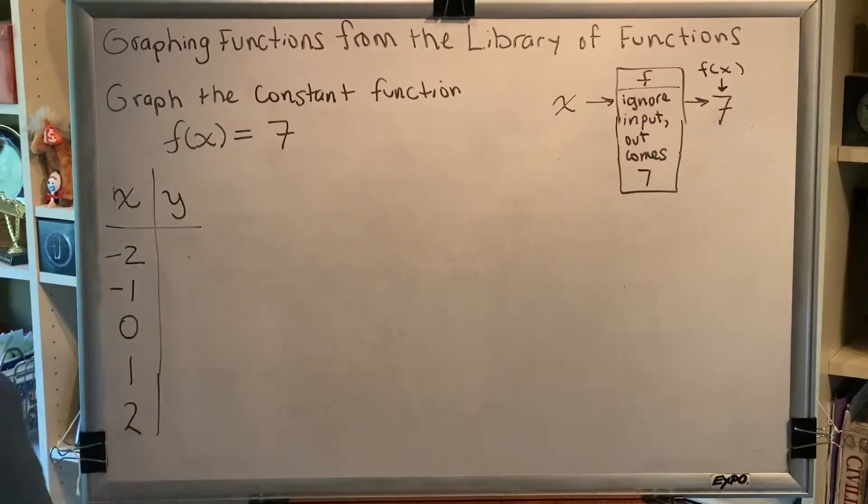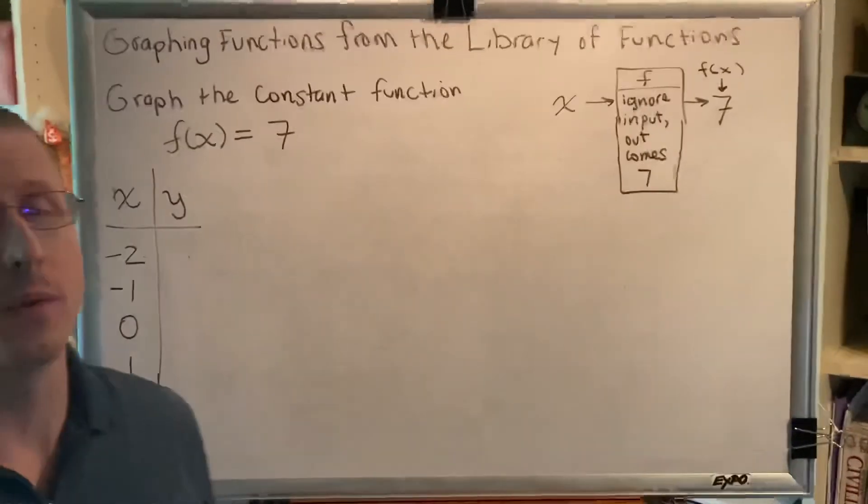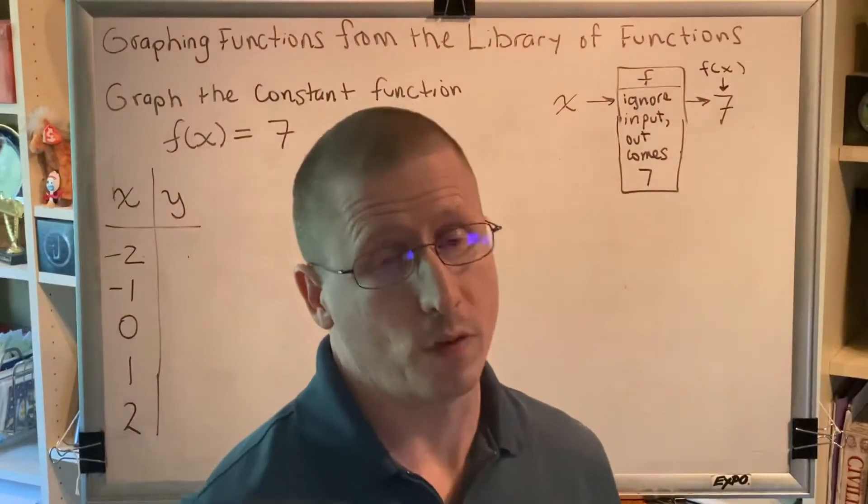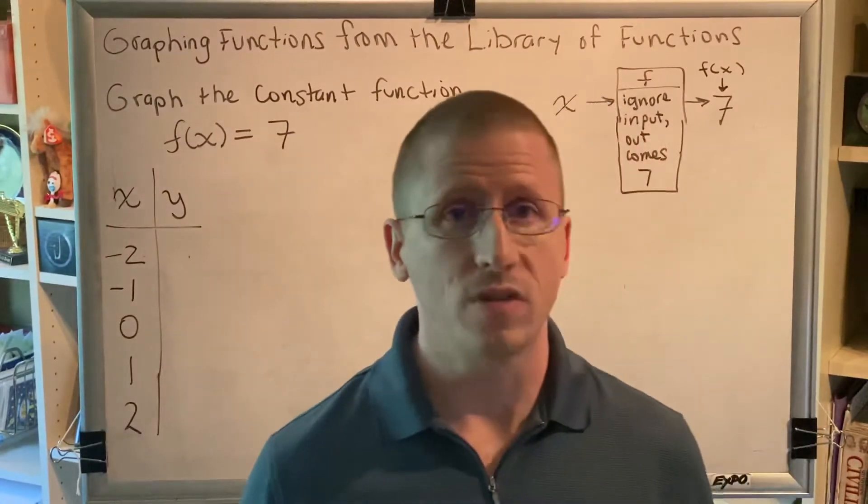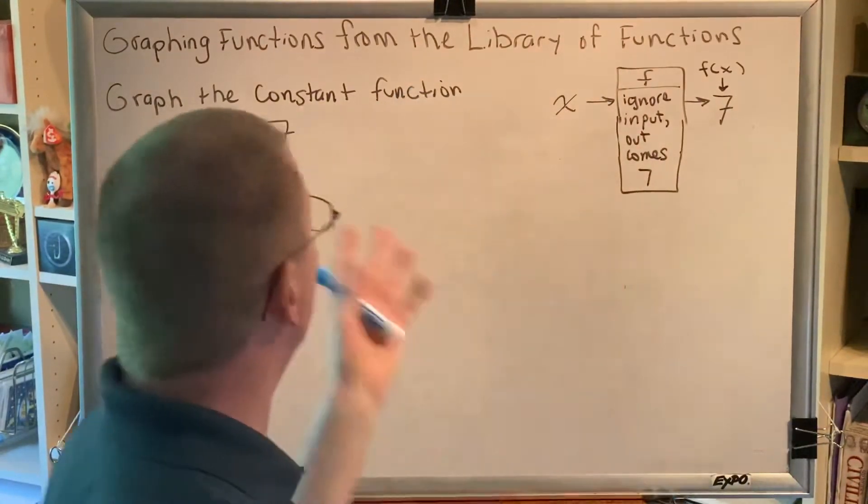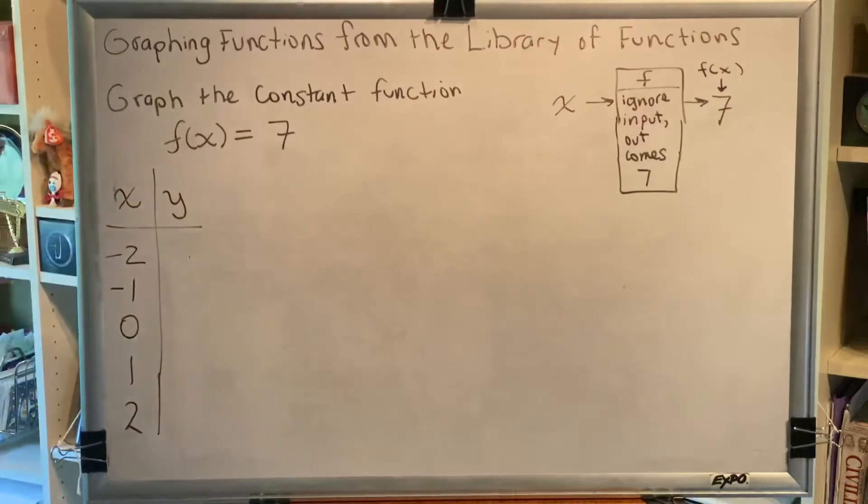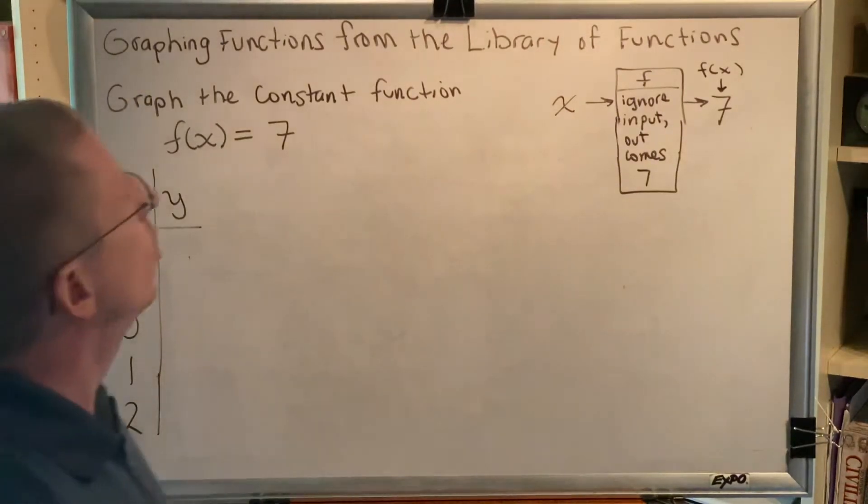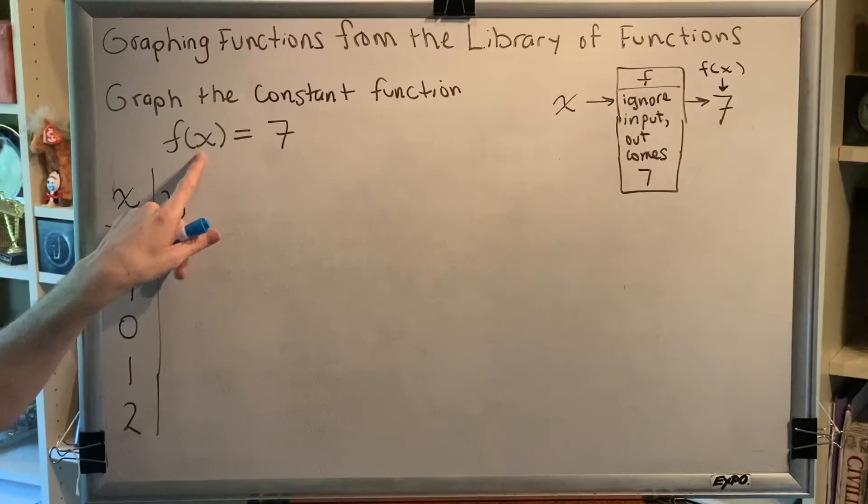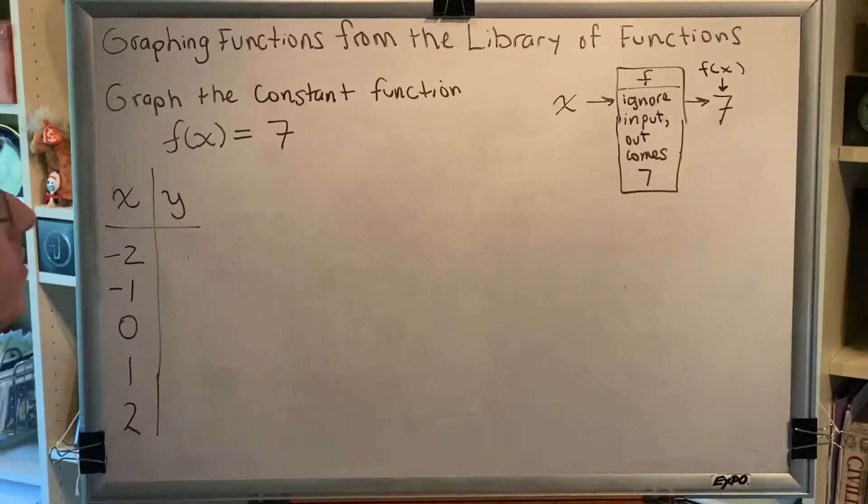Now the first thing I'd like to mention about this is there could be any number here and it would still be the constant function. So f(x) = 1 or f(x) = -5 or f(x) = 7. The interesting thing about the constant function is whatever the input x is, the output f(x) is always 7.